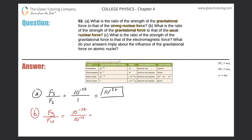To do the division, we simply subtract the exponents: negative 38 minus negative 13 gives negative 25. So the ratio is 10 to the negative 25 to 1 — this is how much weaker the gravitational force is when compared to the weak nuclear force.